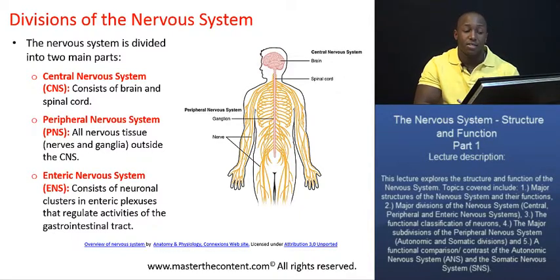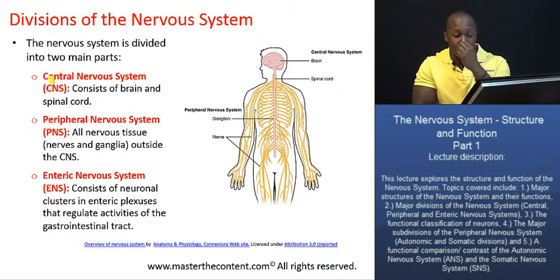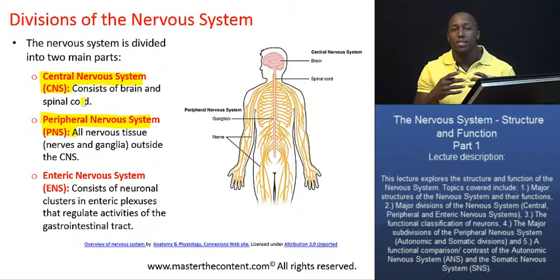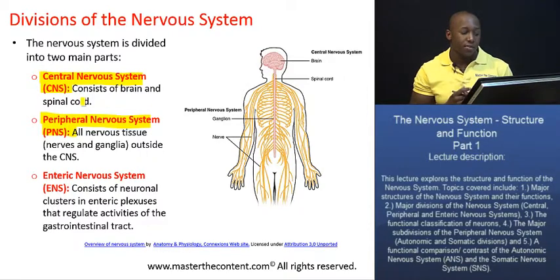Now, the nervous system is functionally divided into what most people believe to be two main parts. I have three on the slide right there. There is the central nervous system, which consists of the brain and the spinal cord, and the peripheral nervous system, which basically consists of all nervous tissue outside the central nervous system — so outside the brain and the spinal cord.